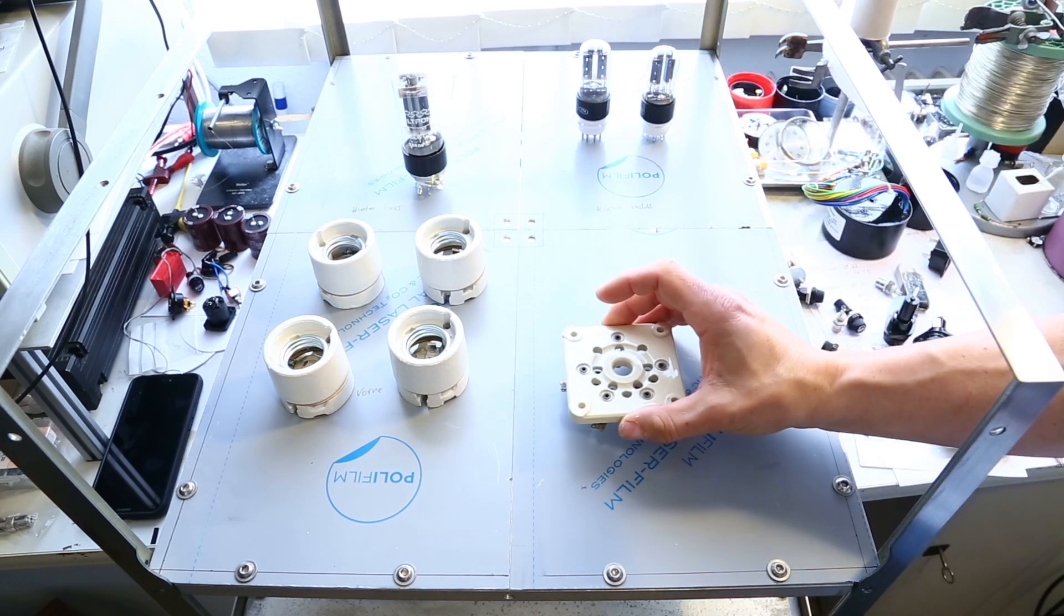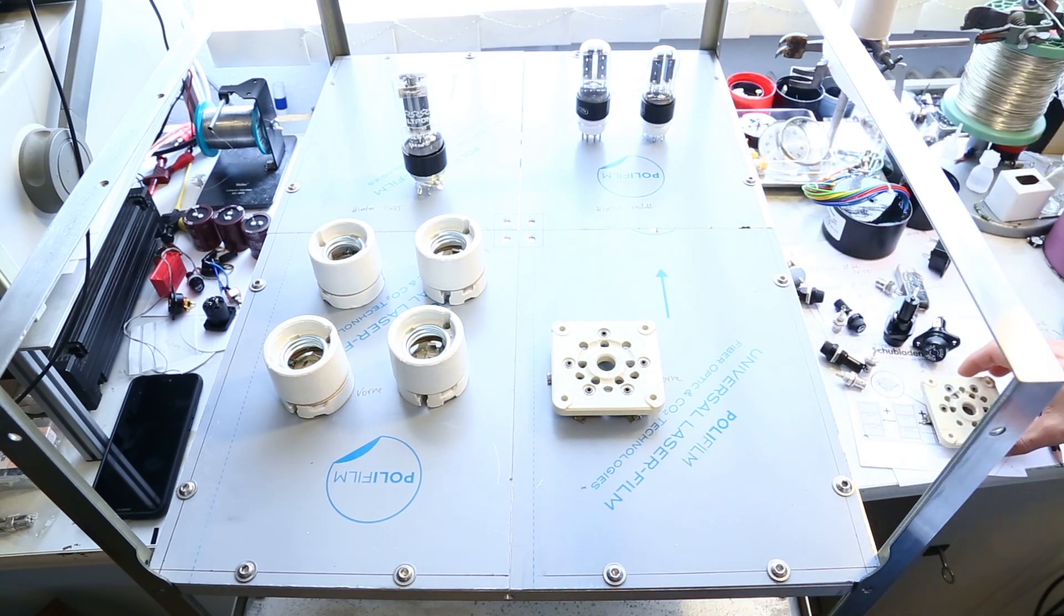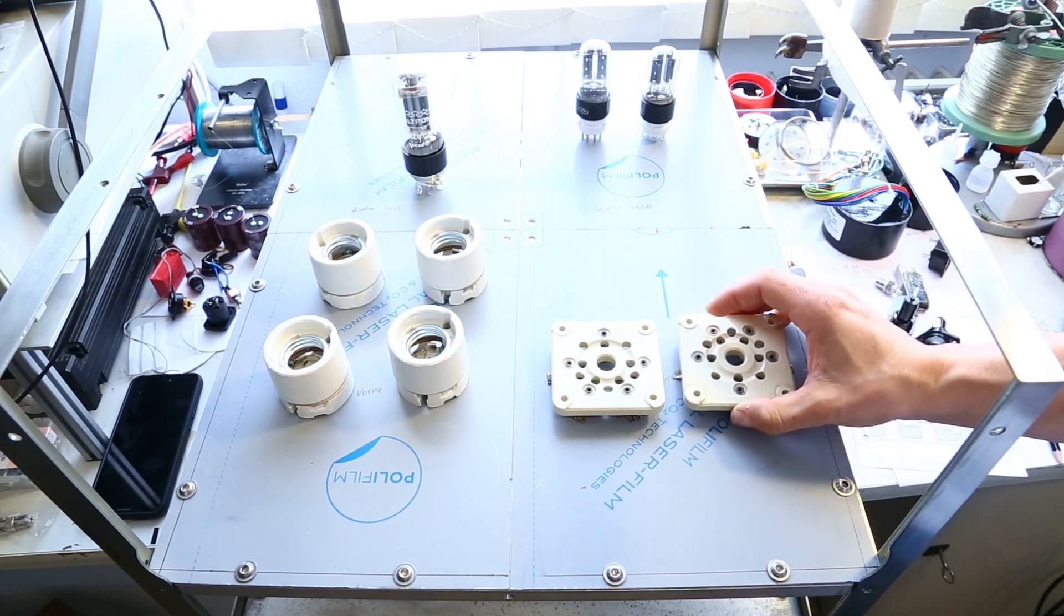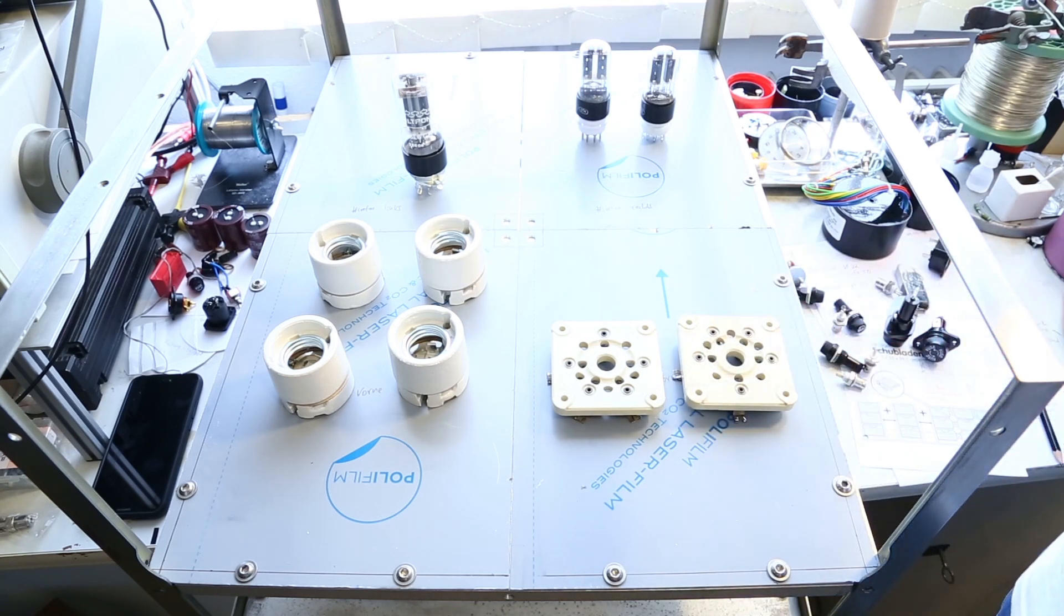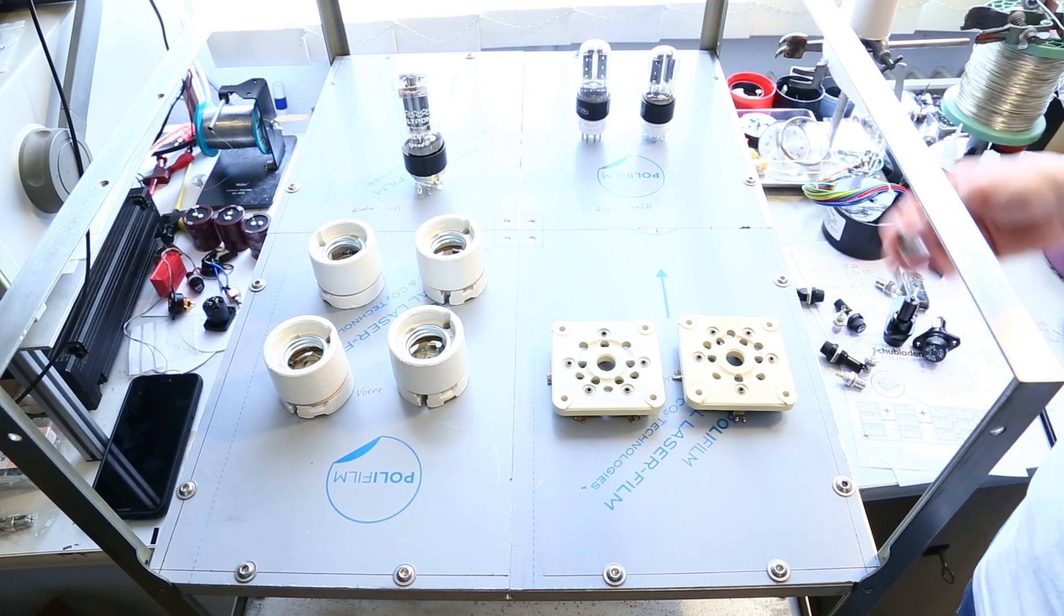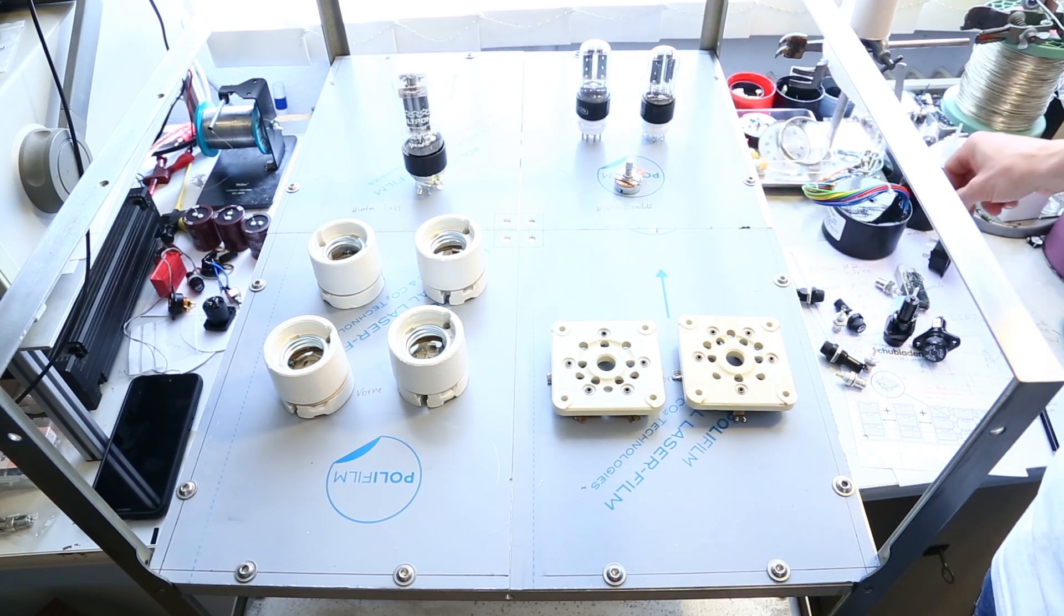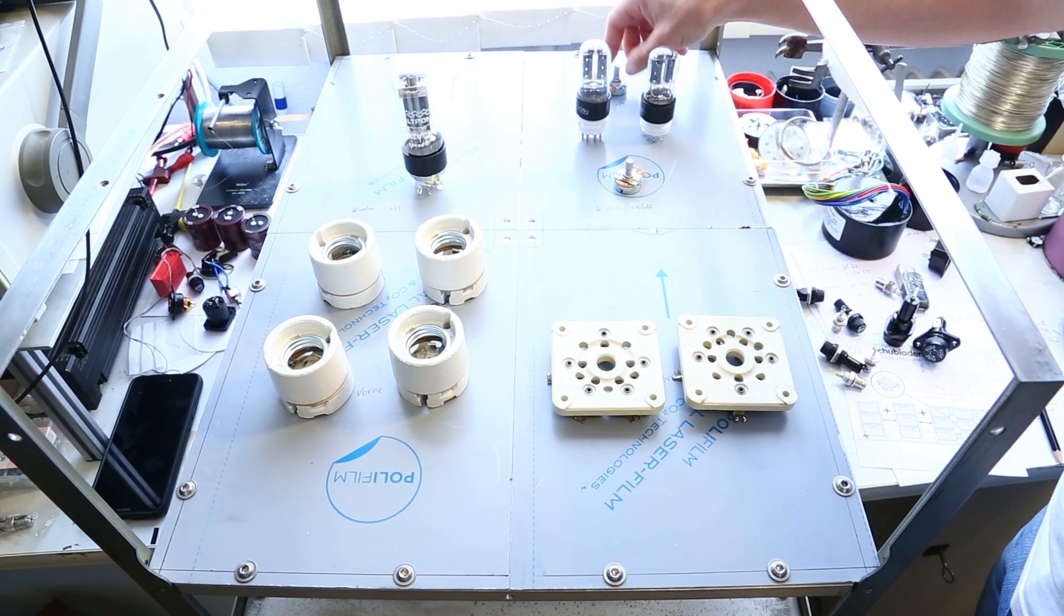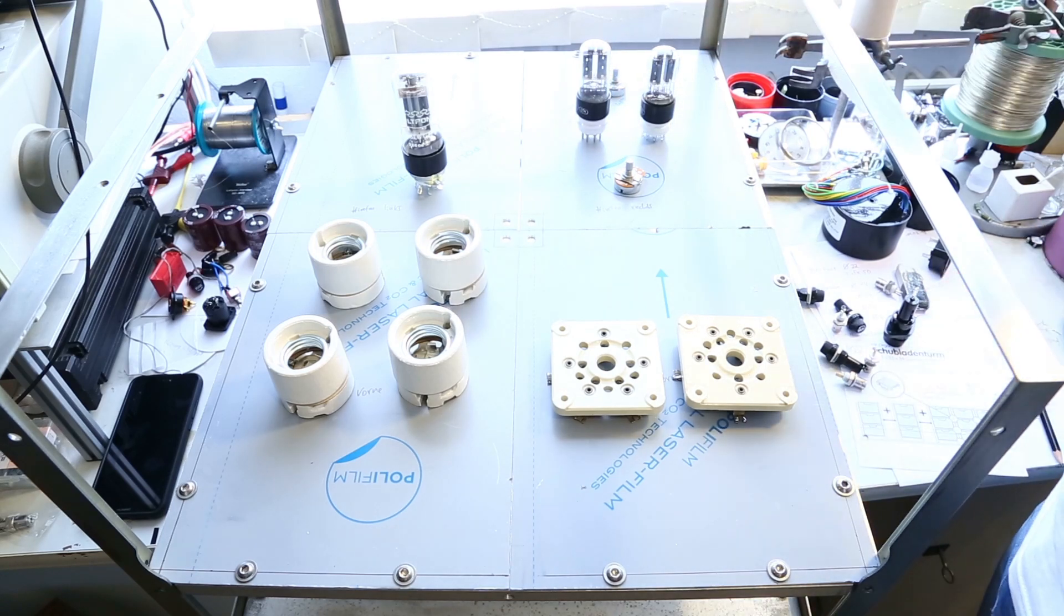And I have two 6SN7GT tubes in the pre-amplifier stage. And here on the right side on the front are the two SRS461 or QE02200 tubes. And there will be some pots in there, and some fuses.